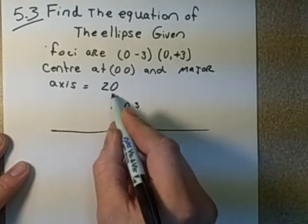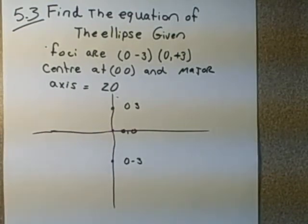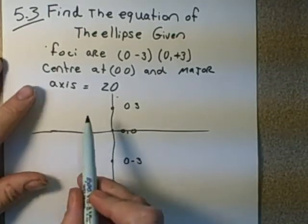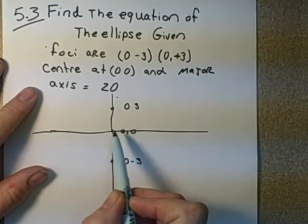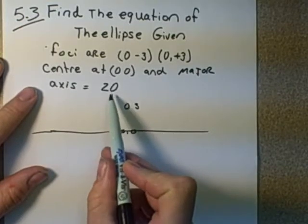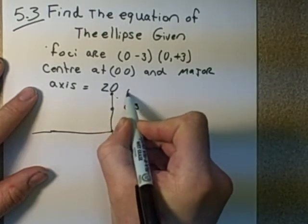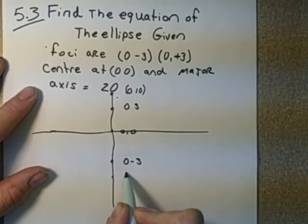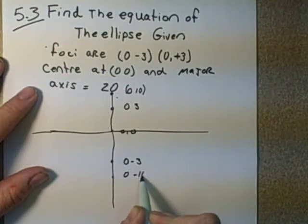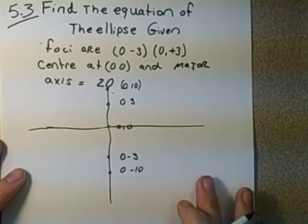So if we had an axis, it would look like that. And then we know that the major axis has a length of 20. So knowing that, we know that the length from A to a vertice, or the edge of the ellipse, is going to be half of that. So it's going to be 10 up here. So that's going to be 0, 10, and this here is going to be 0, negative 10. And that's kind of going to give us our ellipse general shape there.